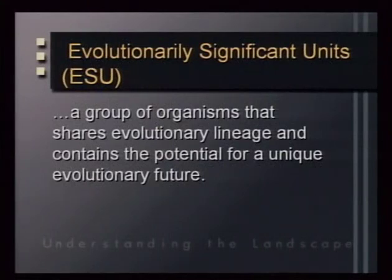Different populations of coho adapted to different river and stream systems spread out the risk of extinction from catastrophic events, giving the species a better chance to persist. These unique population segments are known as evolutionarily significant units — a group of organisms that share evolutionary lineage and contain the potential for a unique evolutionary future.